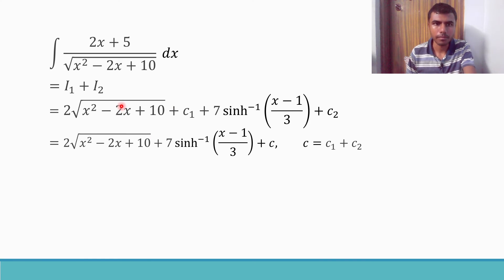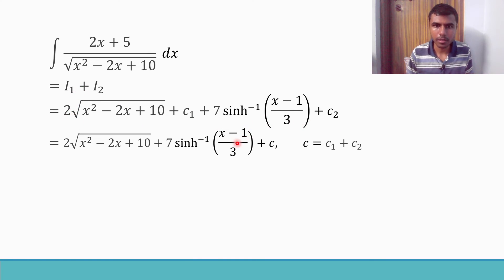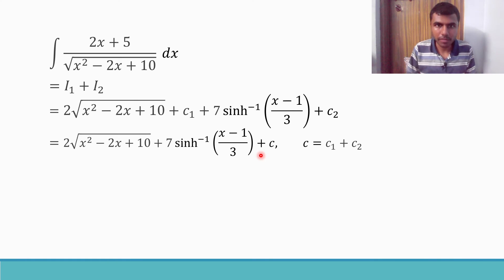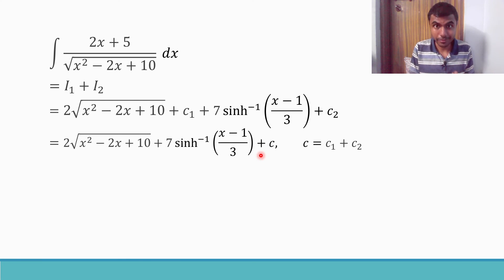The final answer is 2√(x² - 2x + 10) + 7·sinh⁻¹((x - 1)/3) + C, where C = C₁ + C₂. This matches the answer given in the textbook. Thank you very much for staying with me. If you liked this video please hit the like button — it encourages me to make more videos. If this is your first time on my channel, please subscribe.